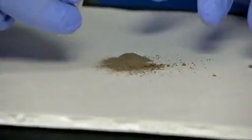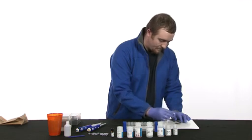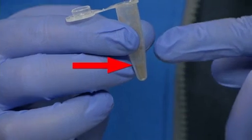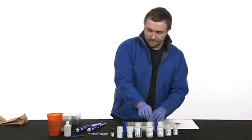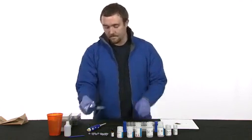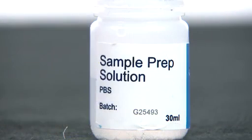Using a 1.5 milliliter microtube, measure to the 0.1 milliliter line, or about a quarter of the way up the tube with your soil sample, equaling to about 50 milligrams. Add 500 microliters of the sample prep solution.